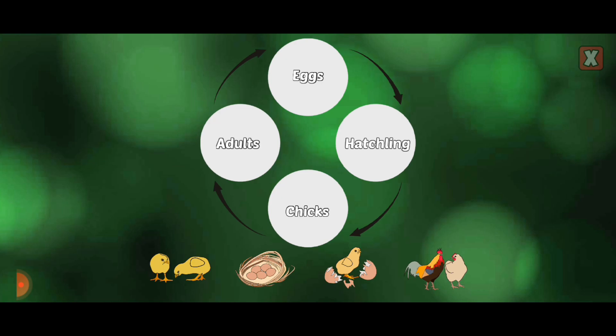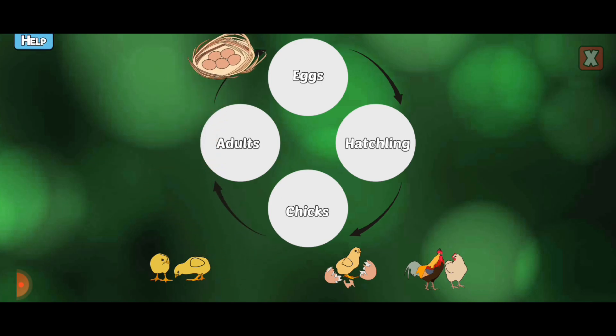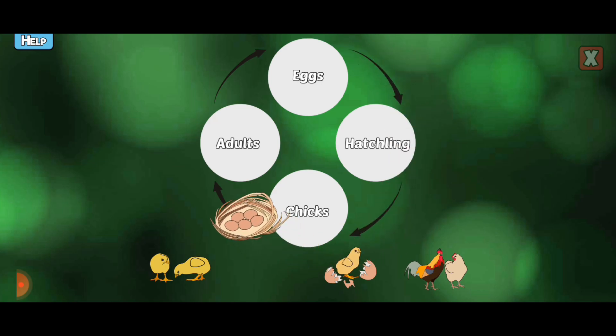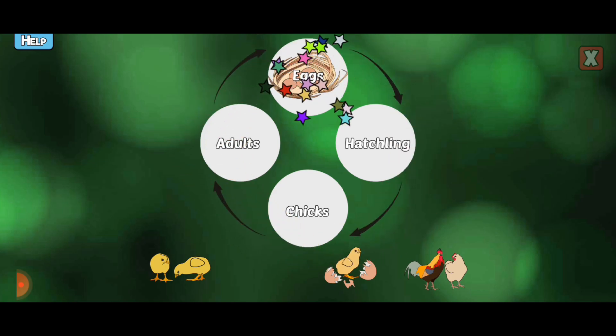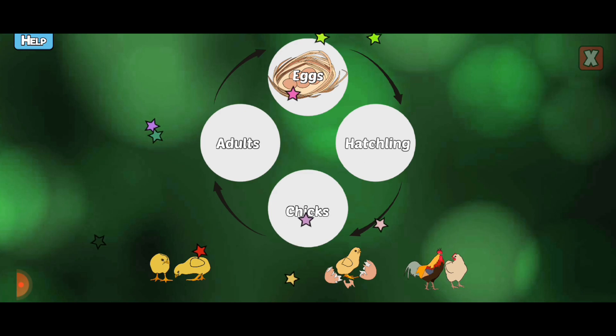Complete the chicken life cycle. Chicken eggs will incubate for about 21 days.